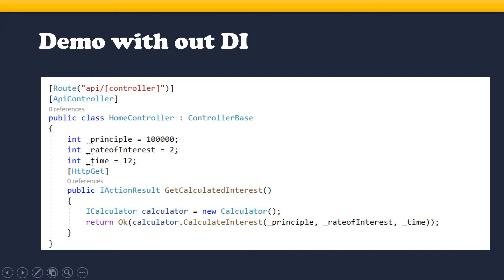If you observe here, HomeController is dependent on the Calculator class. Every time it needs to create an object for the Calculator class — this is called dependency. The drawback is that the controller depends on the actual class. According to SOLID principles, classes should not depend on actual implementation; they should depend on abstraction. If we want to use a different implementation in place of Calculator class, we need to change HomeController, making it difficult to maintain for large applications.